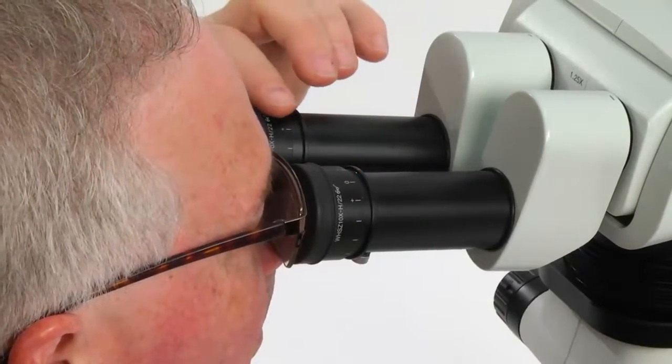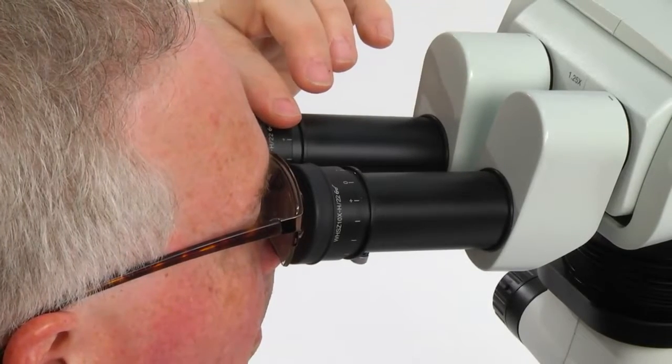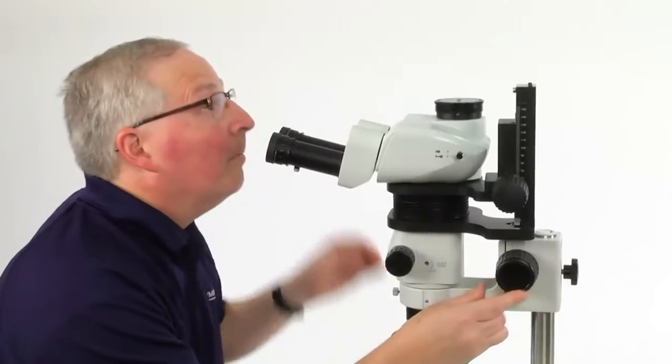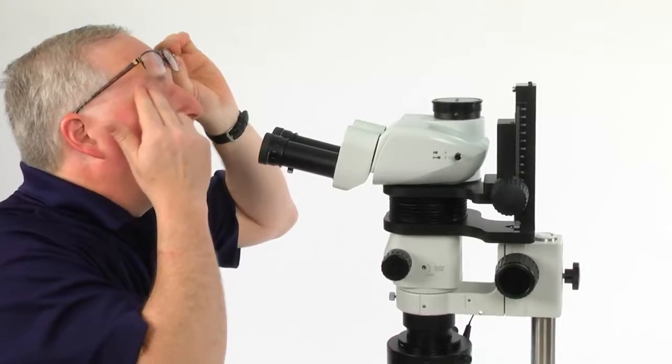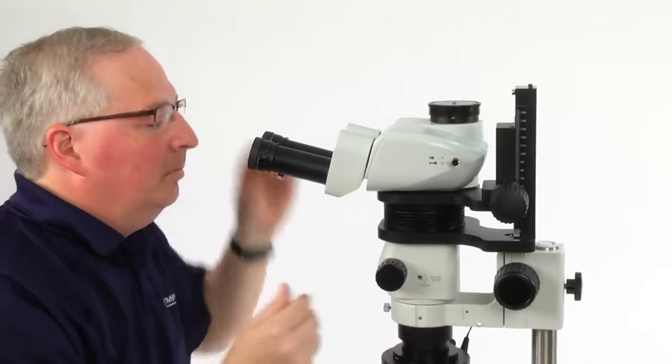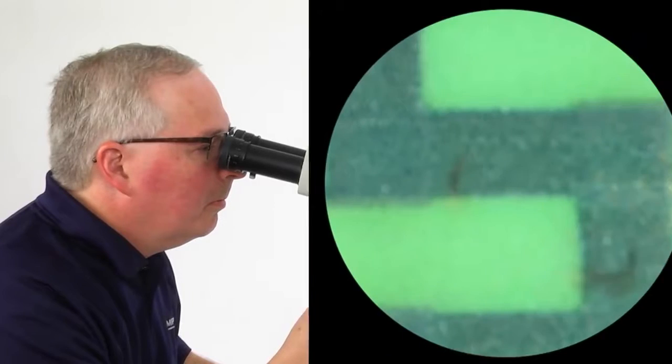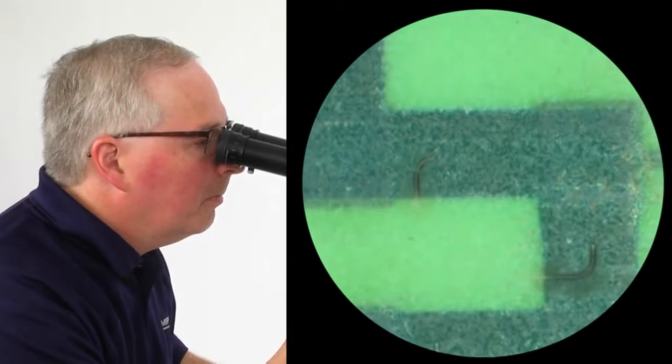The diopter adjustment is used to compensate for differences between one's eyes and is an important step in preventing eye strain that can lead to fatigue, as well as eliminating the tedious task of having to refocus the microscope every time the zoom is changed.